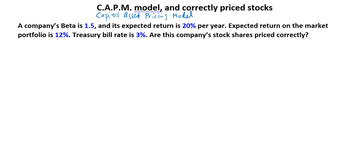Here's what we know. There's a company whose beta is 1.5 and its expected return is 20% per year. Expected return on the market portfolio is 12%. Treasury bill rate is 3%. Are these company's stock shares priced correctly?